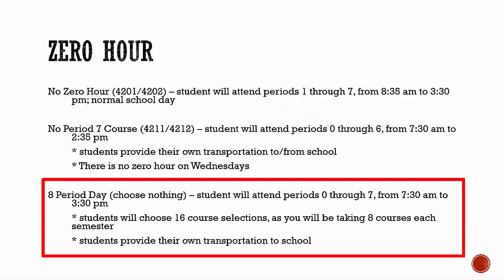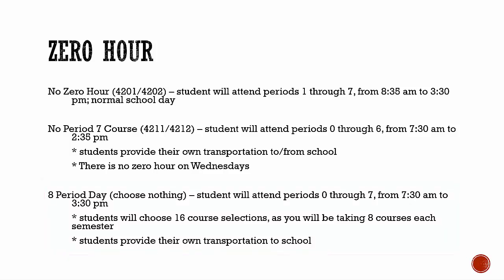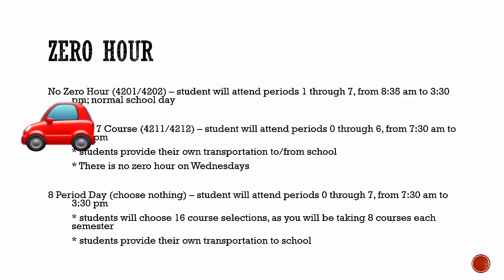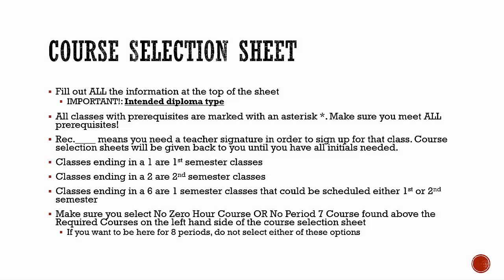If you would like to attend periods zero through seven, you choose nothing. You will then have 16 course selections since you will be staying at school eight periods a day for periods zero through seven. Keep in mind that if you stay all eight periods, you will need to provide your own transportation to school since you will be starting early.